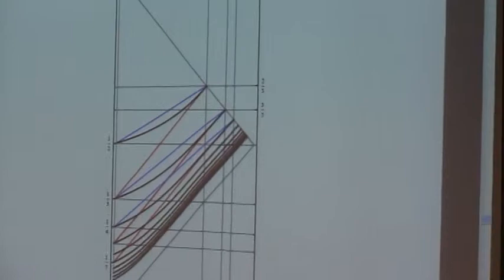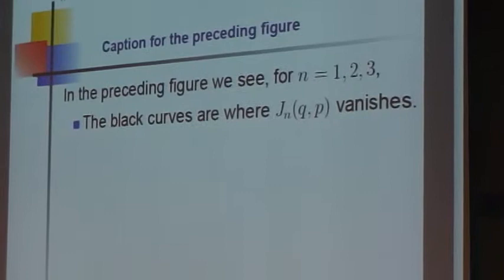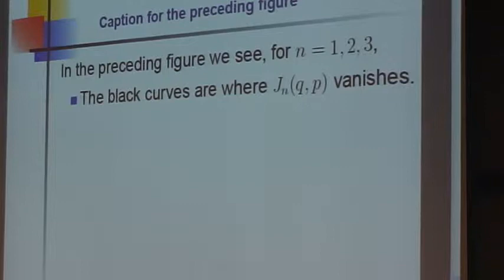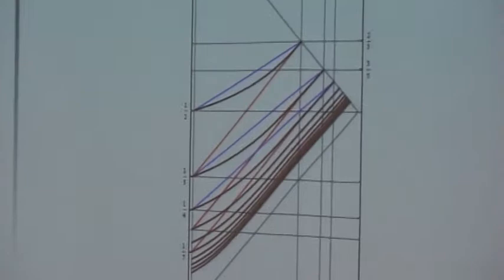So here's a picture of something that shows the upper bound. And the preceding figure, the white curves are where j vanishes.